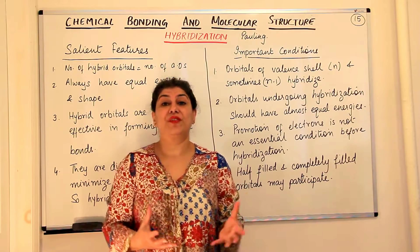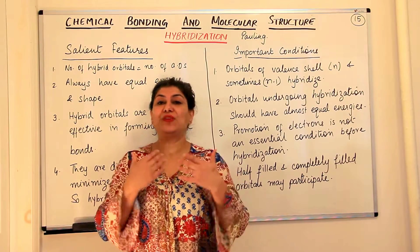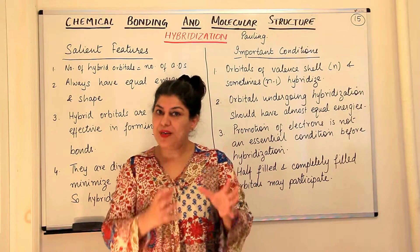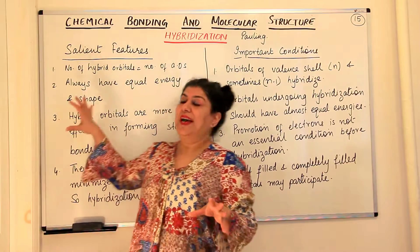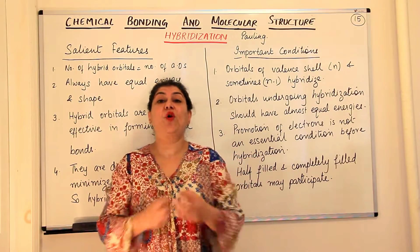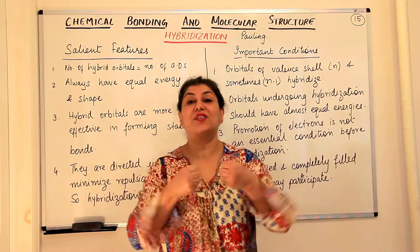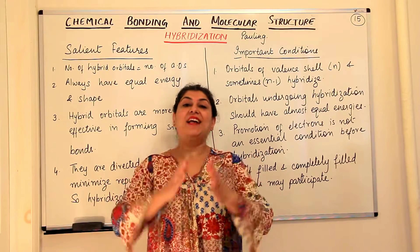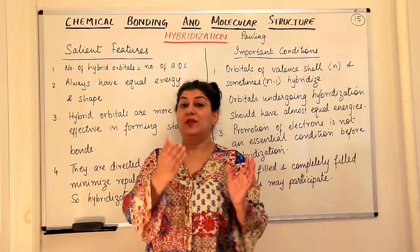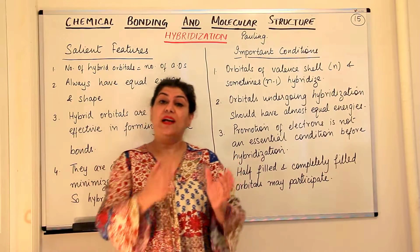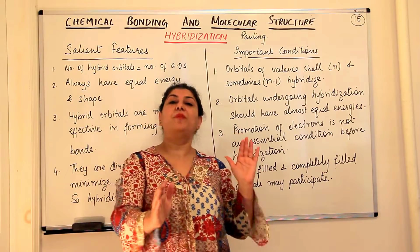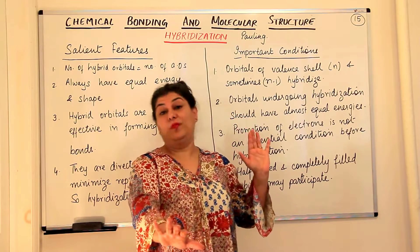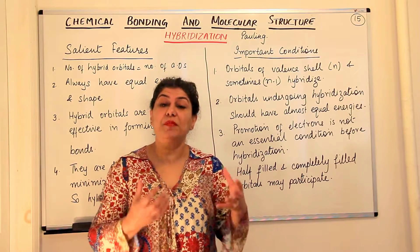Nature always favours symmetry, and even if you think about yourself, anything that is symmetrical looks more appealing. That is why hybridization occurs — the hybrid orbitals formed as a result of combining atomic orbitals are identical in their energy and identical in their shapes. They can be oriented according to the VSEPR model, at maximum distance from each other so that electron pairs experience minimum repulsion.